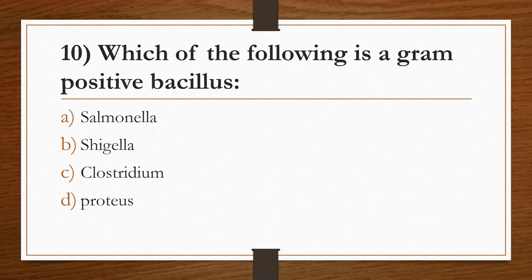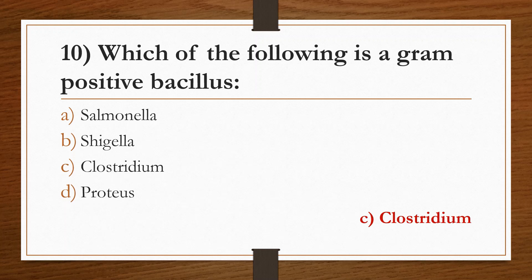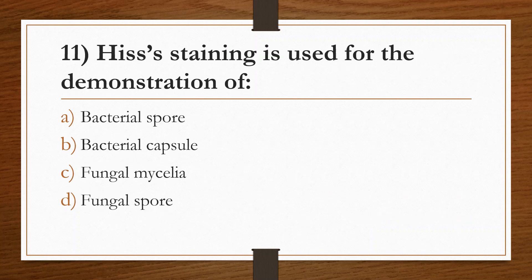Tenth question: which of the following is a gram-positive bacillus? Option A: Salmonella. Option B: Shigella. Option C: Clostridium. Option D: Proteus. Answer is Option C, Clostridium. The other bacteria listed are gram-negative. Eleventh question: His staining is used for the demonstration of Option A: bacterial spore. Option B: bacterial capsule. Option C: fungal mycelia. Option D: fungal spore. Answer is Option B, bacterial capsule.